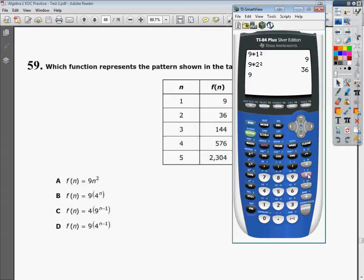Then I do 9 times 3 squared, and I get 81. But what I'm supposed to get when I plug in 3 for this n right here is 144. So I know that this is not the correct answer. I can mark that out.